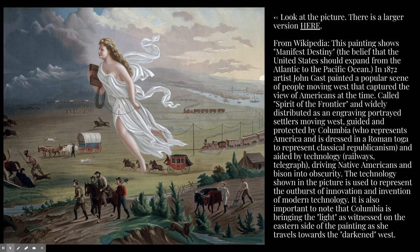In 1872, artist John Gast painted a popular scene of people moving west that captured the view of Americans at the time. Called Spirit of the Frontier and widely distributed as an engraving, it portrayed settlers moving west guided and protected by Columbia, who represents America and is dressed in a Roman toga to represent classical republicanism, aided by technology — railways and the telegraph — driving Native Americans and bison into obscurity. The technology shown is used to represent the outburst of innovation and invention of modern technology.